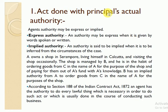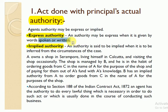The first point — act done by the principal's actual authority. This authority can be express or implied. Express means what the principal has said through spoken words or written words — expressly telling the agent what specific task to do. Now talking about implied authority — implied authority means the principal has not explicitly said anything, but it will be impliedly understood that the agent has authority to do that act.